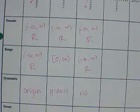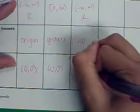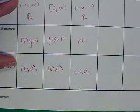There is no symmetry. And the zeros are, again, at 0, 0, because that's the point where it crosses the x-axis.